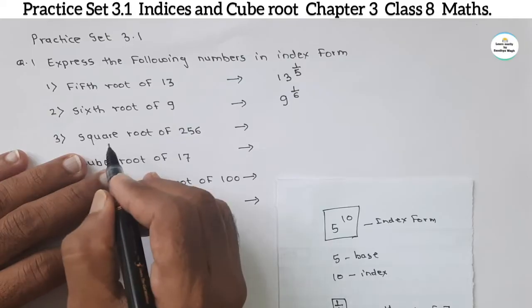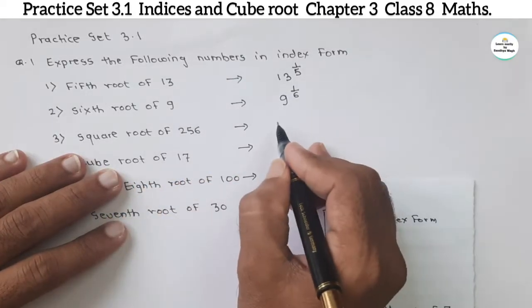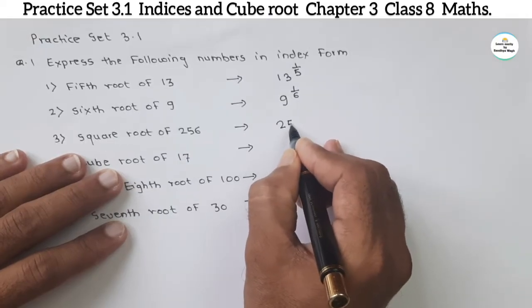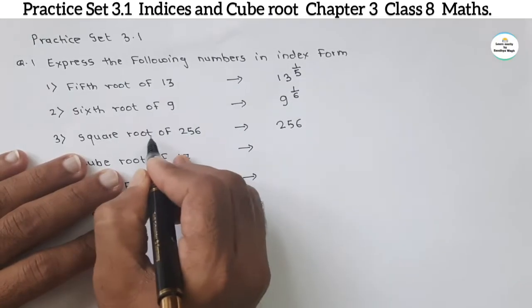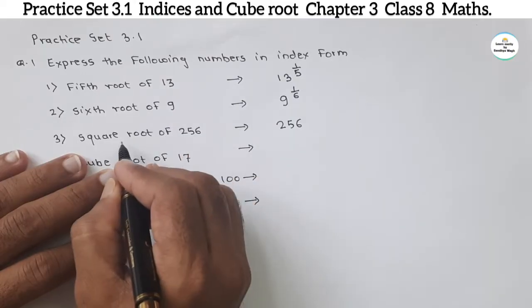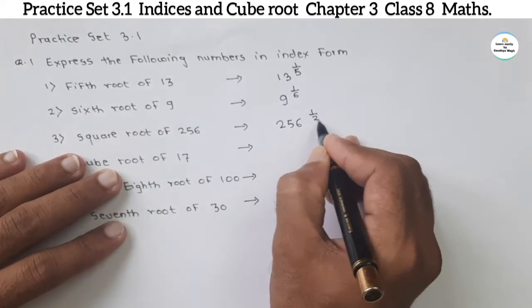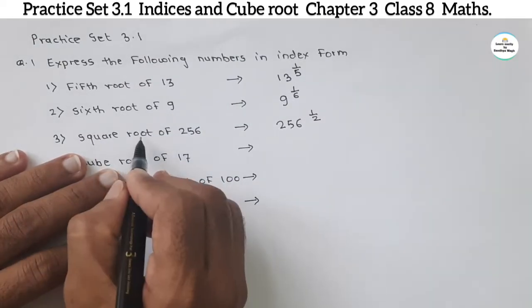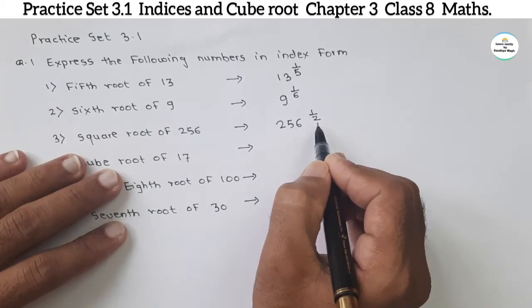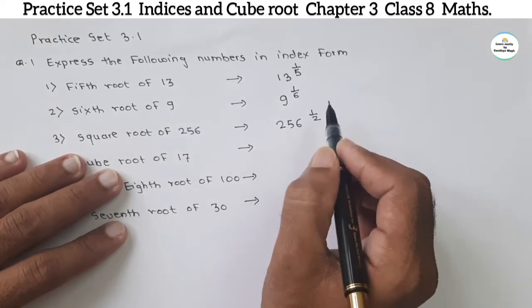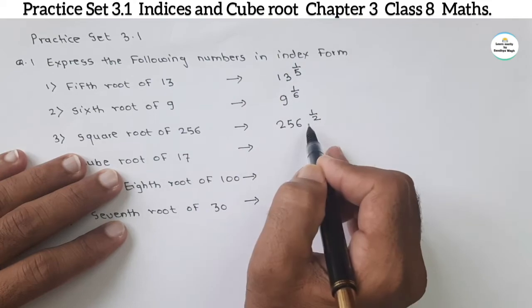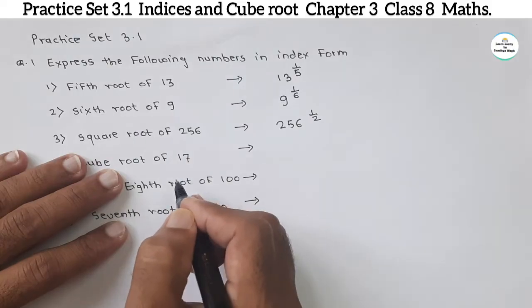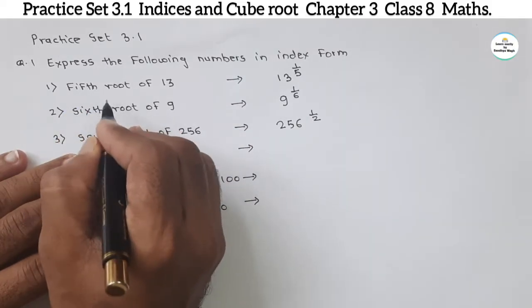Next: square root of 256. Here, 256 is the base. Square root means 1 by 2, because square means 2 and root means it is 1 by 2. So the index form is 256 raised to 1 by 2.